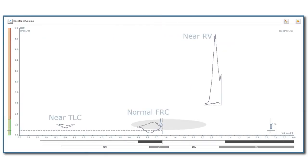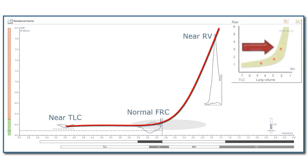When we compare the resistance-volume loops of the three different breathing levels, we can see that this has the same pattern as shown in this graph.